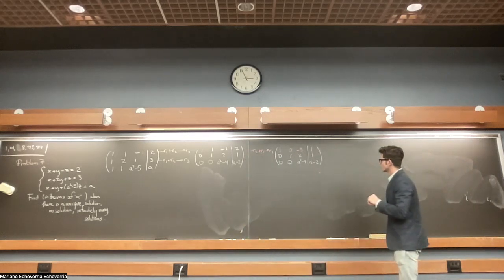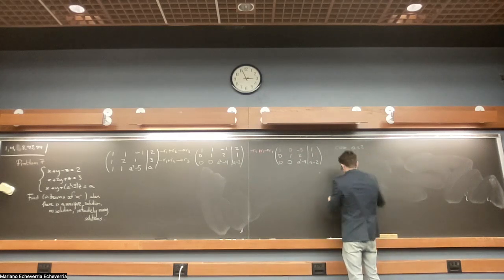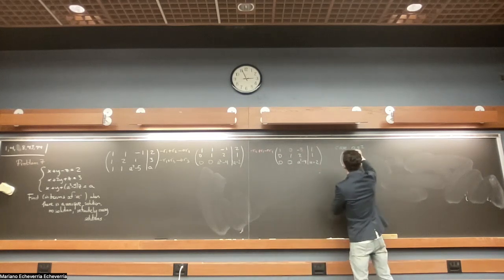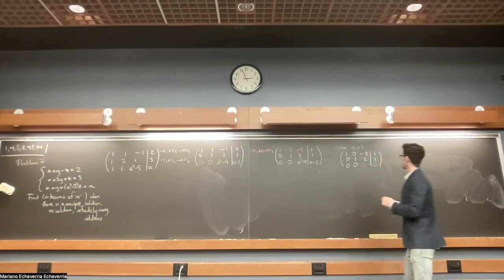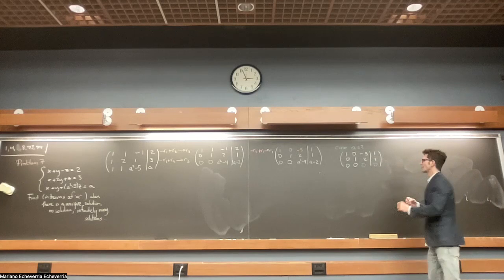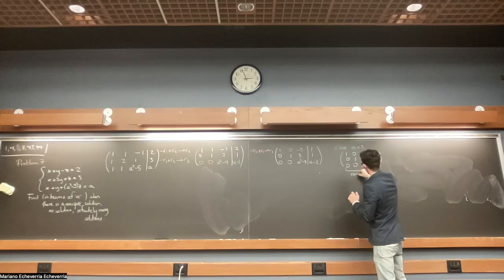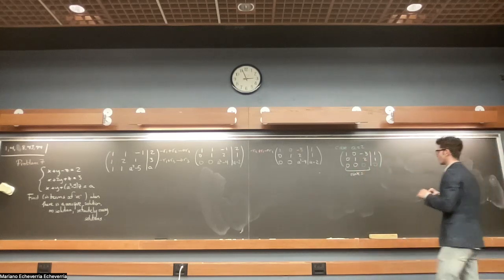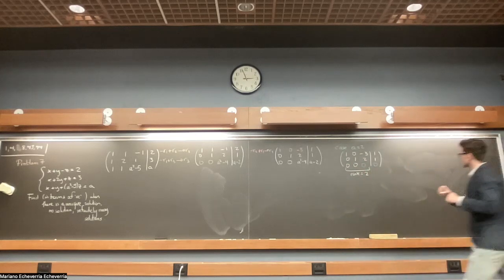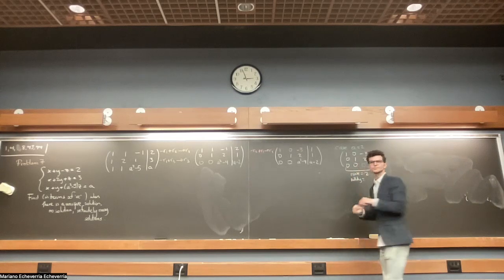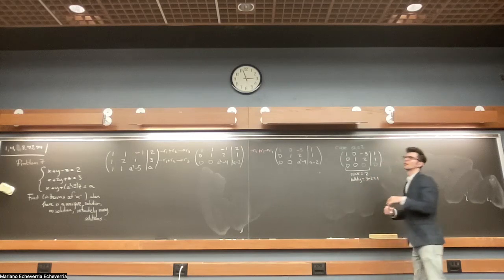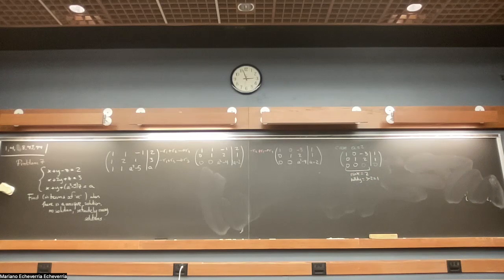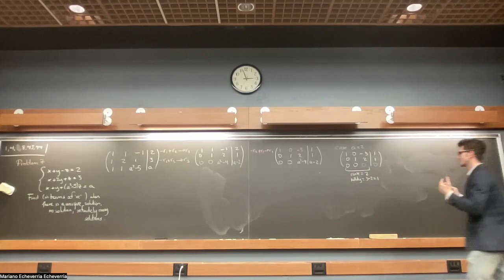If a equals 2, you get the matrix: 1, 0, -3, 1; 0, 1, 2, 1; 0, 0, 0, 0. We already know that entry has to be zero, and when a equals 2 you get zero. Just to practice concepts: what would be the rank of this matrix? It would be two — you count the number of non-zero rows. And the nullity would be one, because there are three columns and rank is two, so it's three minus rank equals one. We expect infinitely many solutions in this case because the nullity is one.